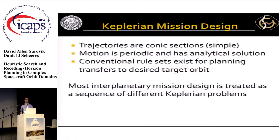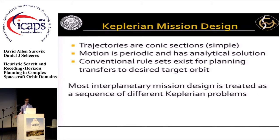Just to briefly touch on what conventional mission design is like: for a lot of previous missions, you're generally orbiting a single body that's dominating your force environment and that is very nearly spherical, which produces nearly Keplerian motion. Kepler described this motion in very simple terms with conic sections, and if you are on a bound orbit in this kind of system, motion is roughly periodic and it's very easy to say where you'll be in the future.